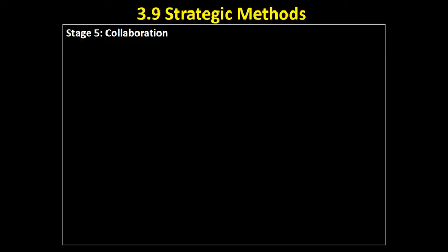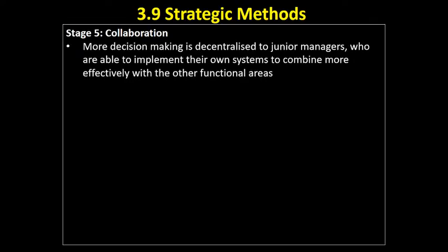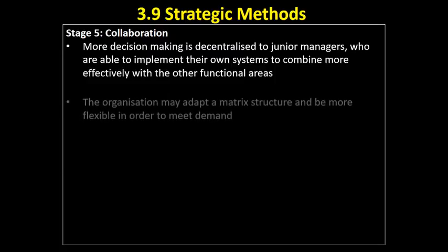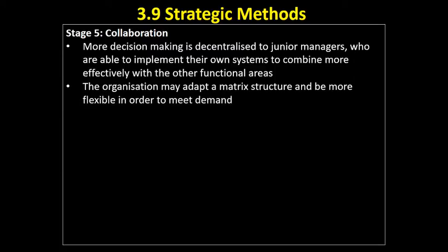So what does the collaboration stage look like? These policies and procedures have become too burdensome, and it's time to decentralize some decision-making to junior managers who will be able to be creative and come up with their own systems. They've got more freedom to combine more effectively with other functional areas. The organization may adopt a matrix structure with more informal communication and flexibility to meet demand.